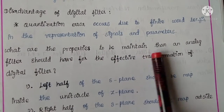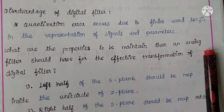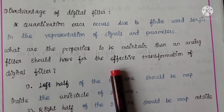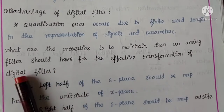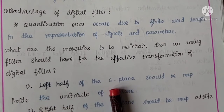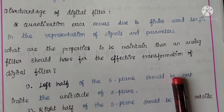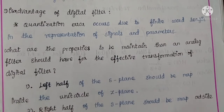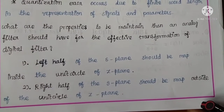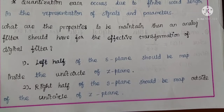Next, what are the properties to be maintained for the effective transformation of an analog filter to a digital filter? First, the left half of the S-plane should be mapped inside the unit circle of the Z-plane. Second, the right half of the S-plane should be mapped outside the unit circle of the Z-plane.